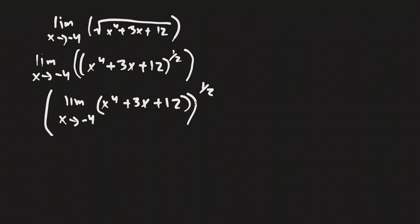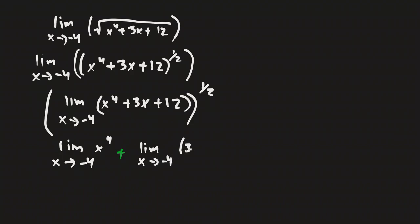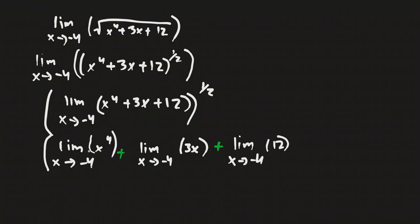Now let's solve the inside and then we can square root the whole thing. We can break this up using the sum rule into: the limit as x approaches negative 4 of x to the fourth, plus the limit as x approaches negative 4 of 3x, plus the limit as x approaches negative 4 of 12 — all of this raised to the 1/2 power.